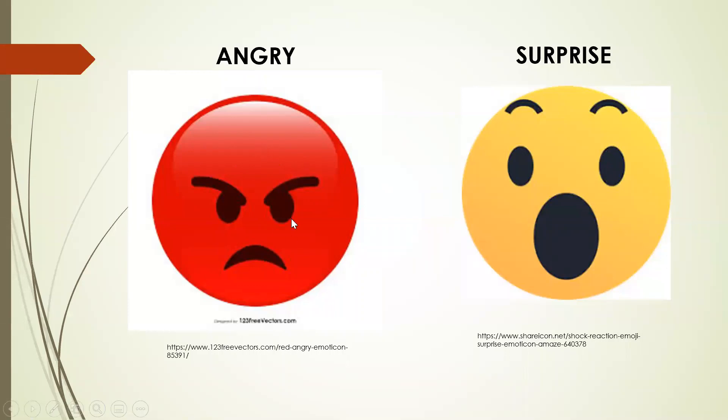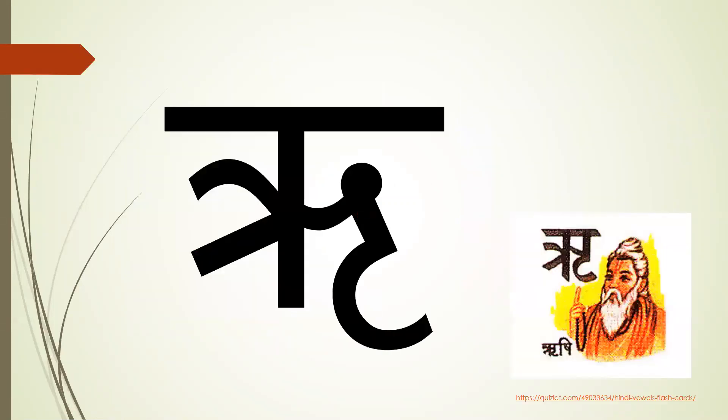Do you see this red guy here? He is mad or angry. And this guy right here? He or she is surprised. For angry or mad in Hindi the word is gussa. And for surprise the word is hairaan. Angry means gussa, surprise means hairaan.